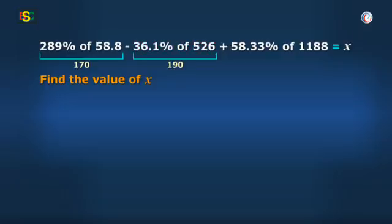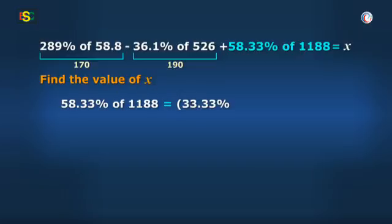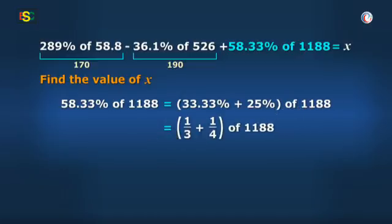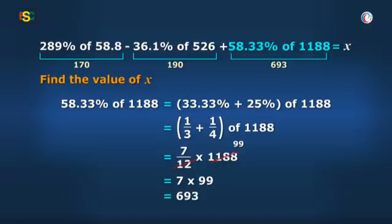And then, we come to third part. It says 58.33% of 1,188 and 58.33% of 1,188 is, yes, it is 33.33% plus 25% of 1,188. That is 1 by 3 plus 1 by 4 of 1,188 or 7 by 12 into 1,188 equal to 7 into 99 that is 693.